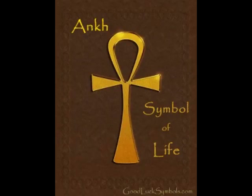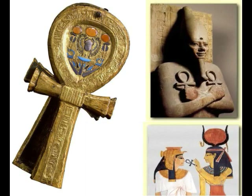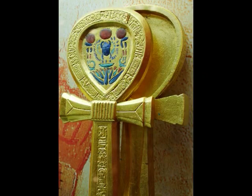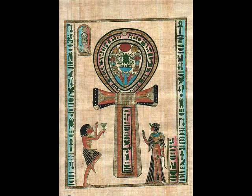The Ankh is a cross with a loop top which, besides the concept of life, also symbolized eternal life, the morning sun, the male and female principles, and the heavens and the earth. Its form embodied these concepts in its key-like shape. In carrying the Ankh, one was holding the key to the secrets of existence.